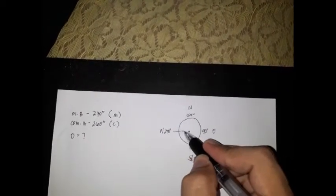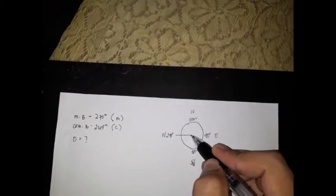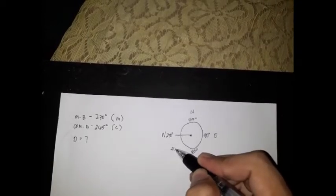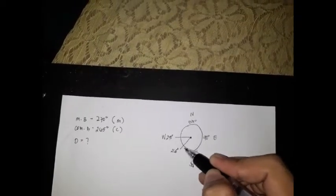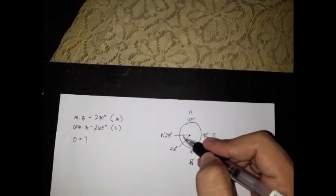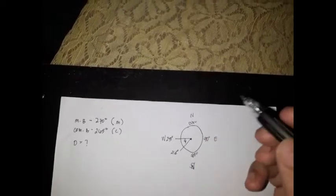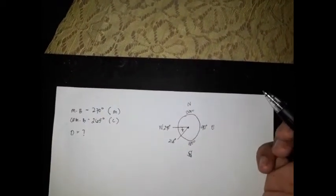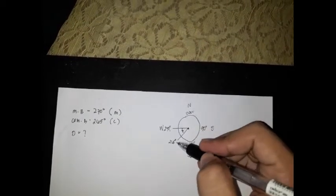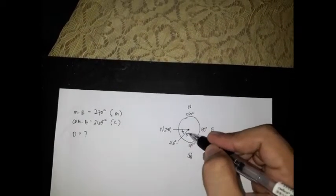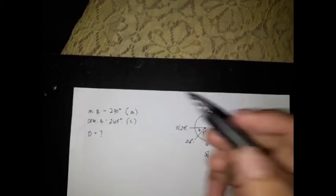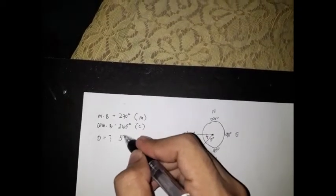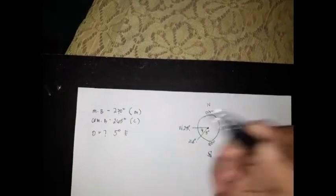Our deviation is the difference between 270 and 265 degrees, which is 5 degrees. Our deviation is 5 degrees east.